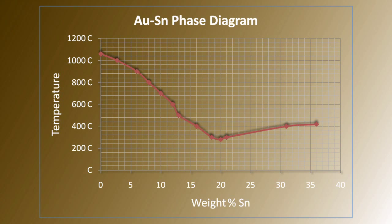The binary gold-tin phase diagram has two eutectic compositions. It is the 80-20-by-weight alloy, with a melting point of 278°C that is used in this process.